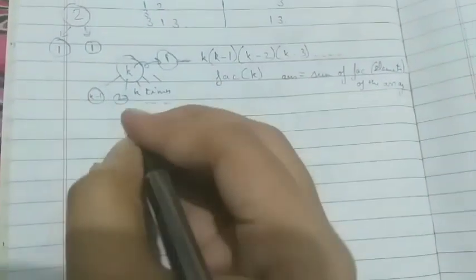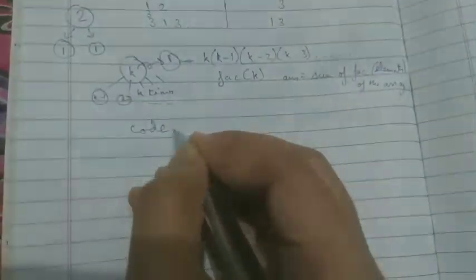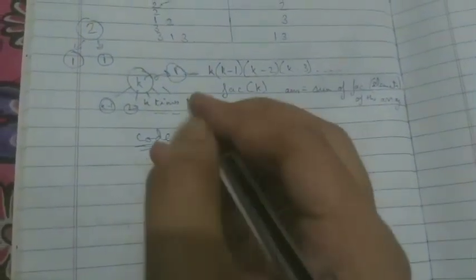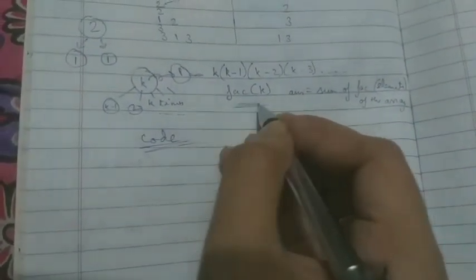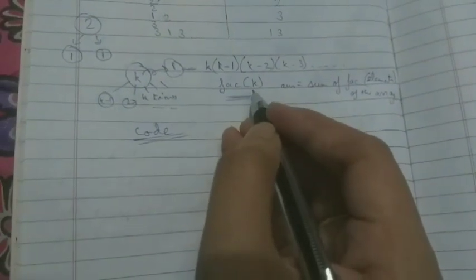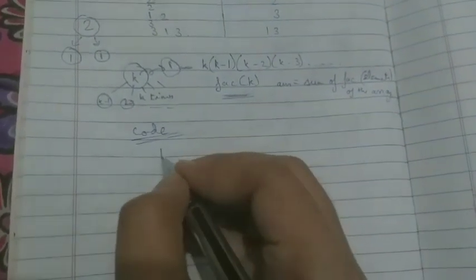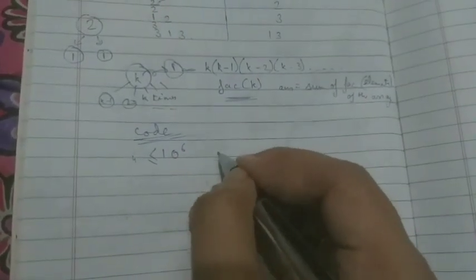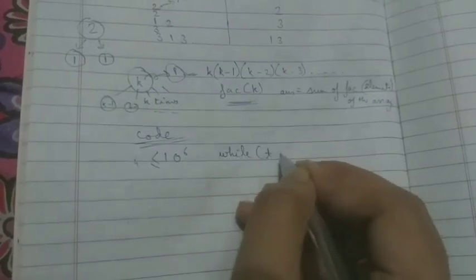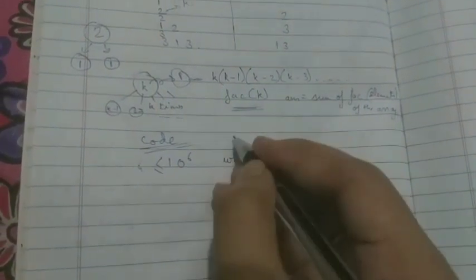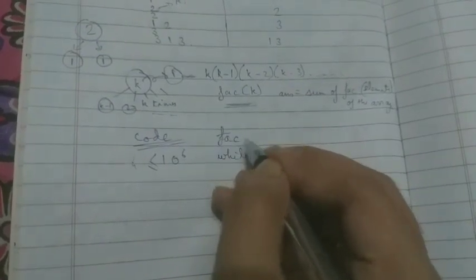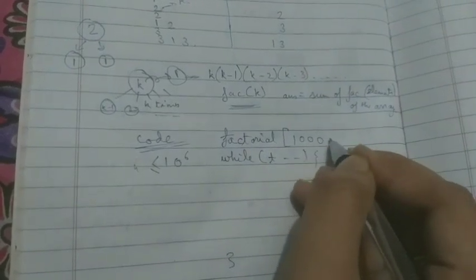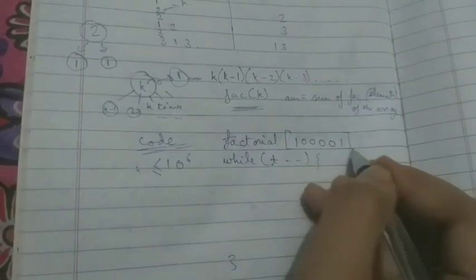Now about the code, this may seem like a very big deal because calculating factorial is very big. We know that the k value, that is a of i value, is less than equal to 10 to the 6. So beforehand, before starting the test case loop, we have to make an array of factorial of size 10 to the 6 plus 1.